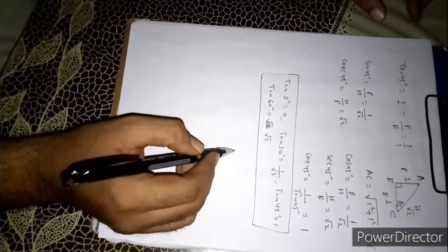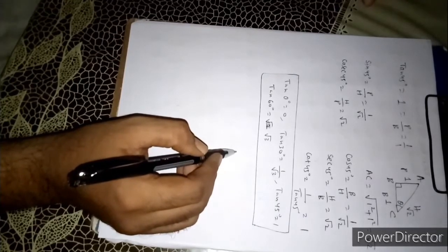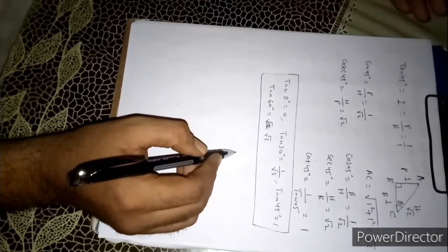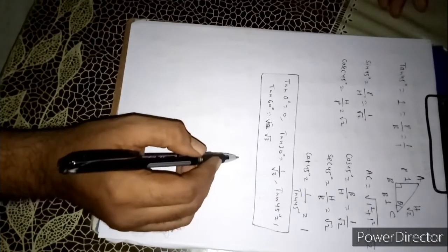We can easily find the other trigonometric ratios of sin theta, cos theta, cosec theta, and sec theta. Thank you.